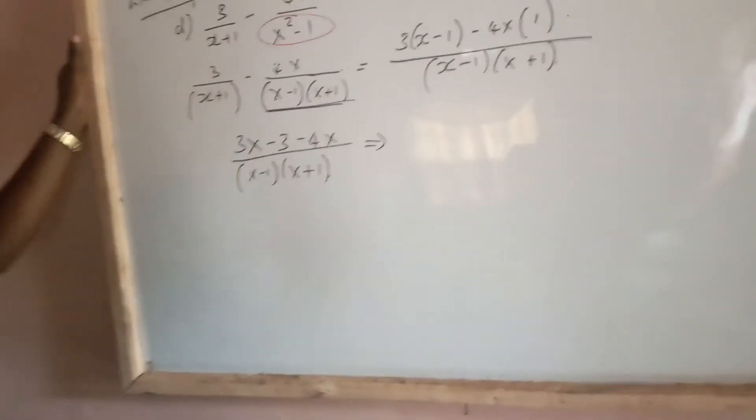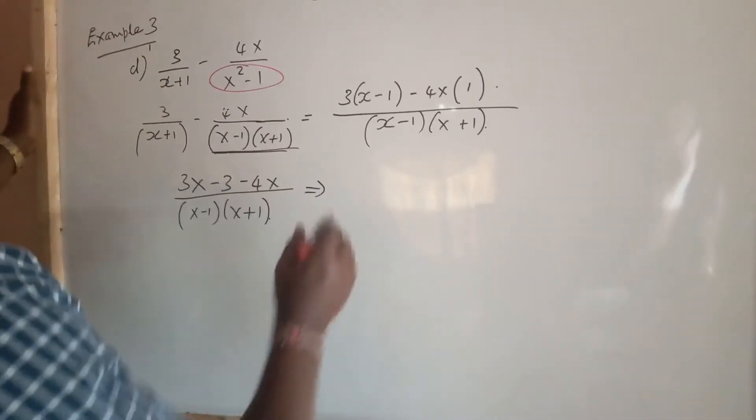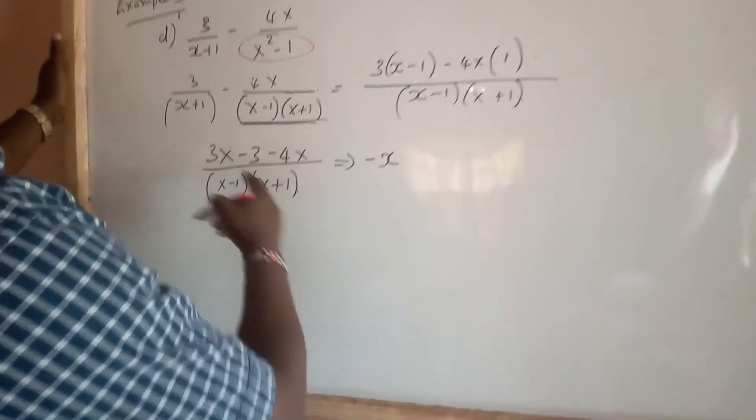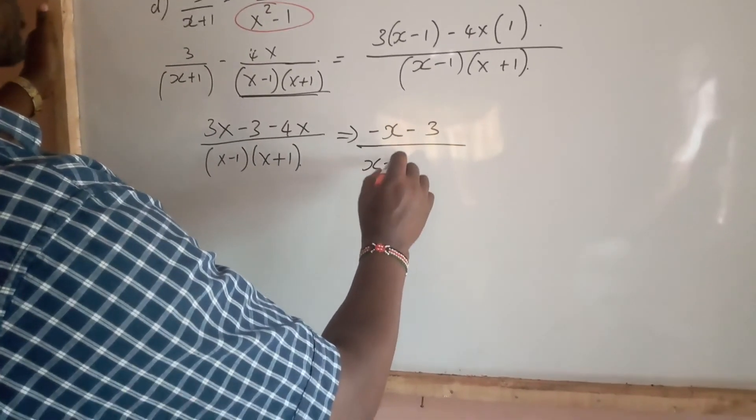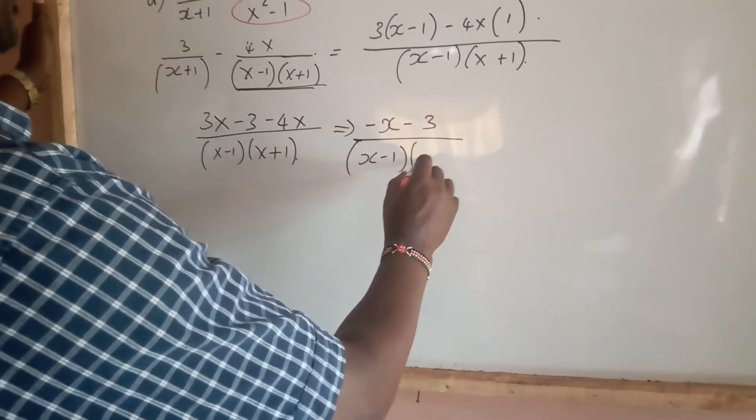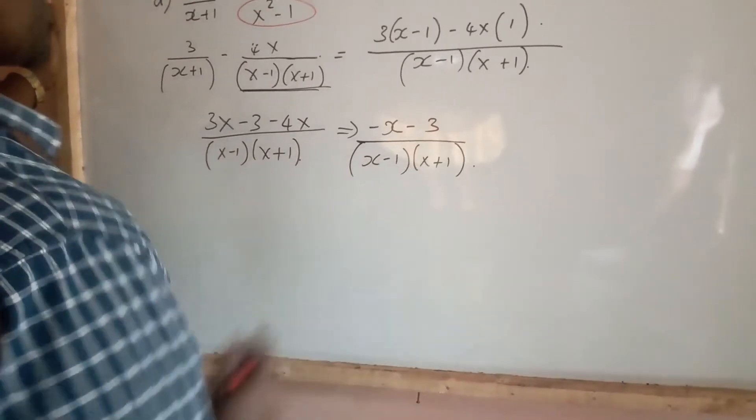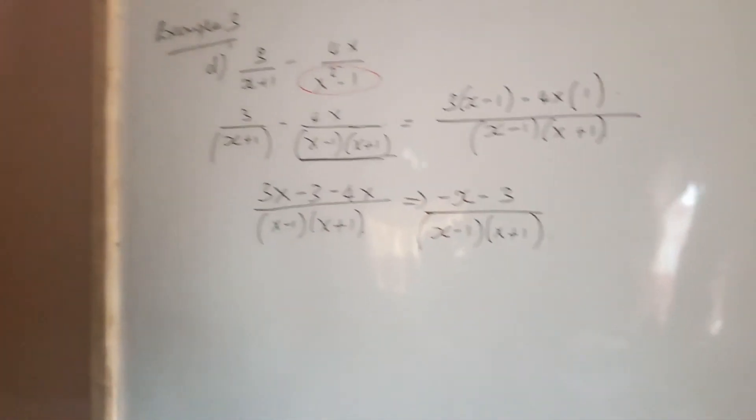Collecting the like terms, 3x minus 4x is negative x, minus 3, all over (x-1)(x+1).